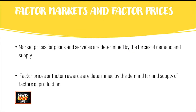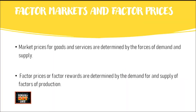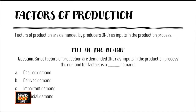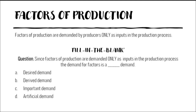In factor markets and product markets, prices for goods and services are determined by the forces of demand and supply. The factor prices — or rewards for the factors of production — are also determined by the demand and supply of those factors. Factors of production are demanded only as inputs in the production process, so the demand for these factors can be called a 'derived demand.' Can you remember what type? Is it desired demand, derived demand, important demand, or artificial demand? We'll come back to that later.